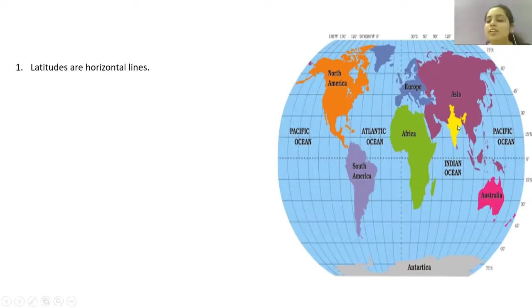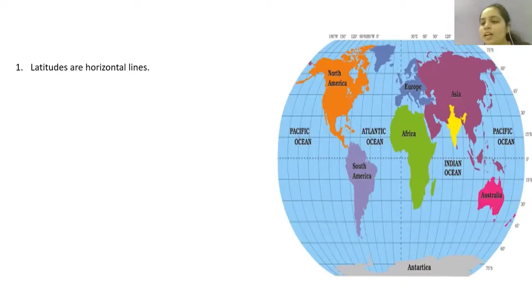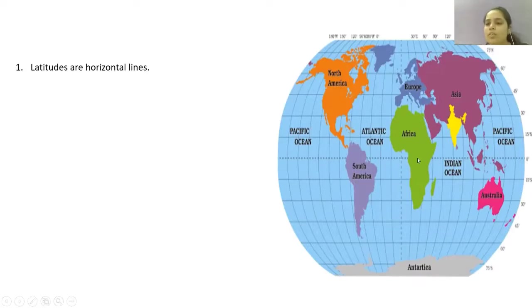are known to lie in the northern hemisphere. India lies above the equator, hence it is said that India lies in the northern hemisphere. When we talk about Australia, you can see it is situated to the south of the equator, hence Australia lies in the southern hemisphere. All continents that lie to the south of the equator are said to be in the southern hemisphere.